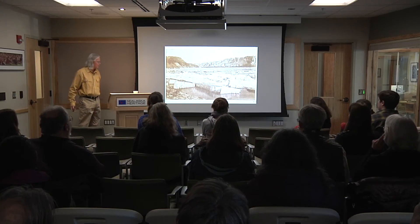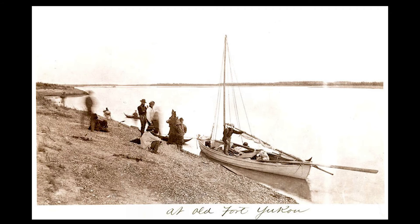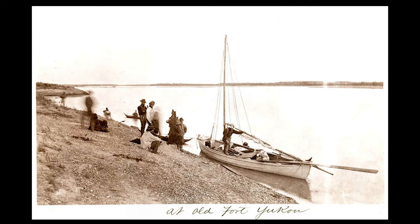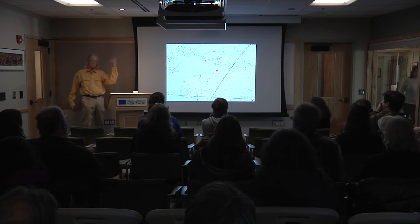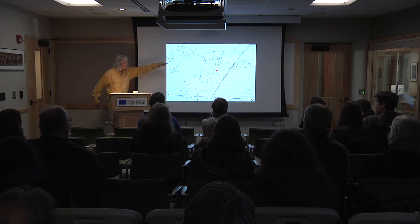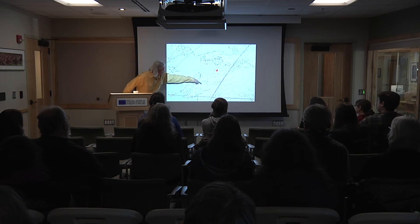Then the ice broke up on the Porcupine River again, and they all got on down. This is where the Porcupine comes into the Yukon. Both parties ended up going down the Yukon and around to St. Michael, because it was the gateway to the Yukon. The Yukon River — especially in the Delta — is really shallow. The Bering Sea is an arm of the Pacific Ocean. So ocean-going craft would come to St. Michael and then offload cargo onto flat-bottomed paddle-wheel steamboats that could then go up the Yukon River.